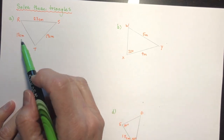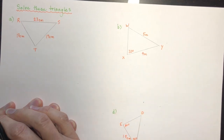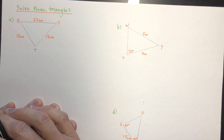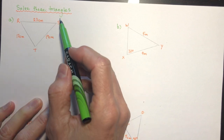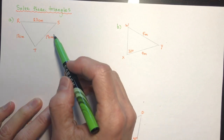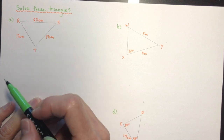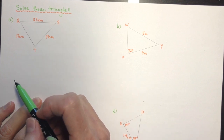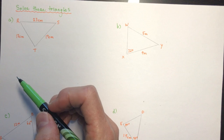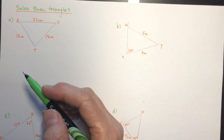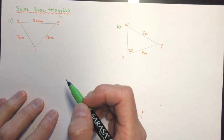Question A: side-side-side — all three sides are given. You can't use the sine law because you don't have any angles. So just like the LMN example, pick an angle to solve for. Let's solve for angle R.